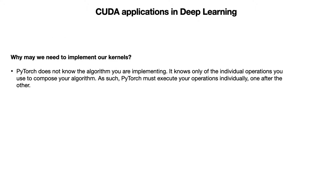Why might we need to implement our own kernel? That's an obvious question because we can directly use PyTorch operations. Why would we want to implement our own kernel? PyTorch doesn't know the algorithm we are implementing — it only knows the individual operations we use to compose our algorithm.